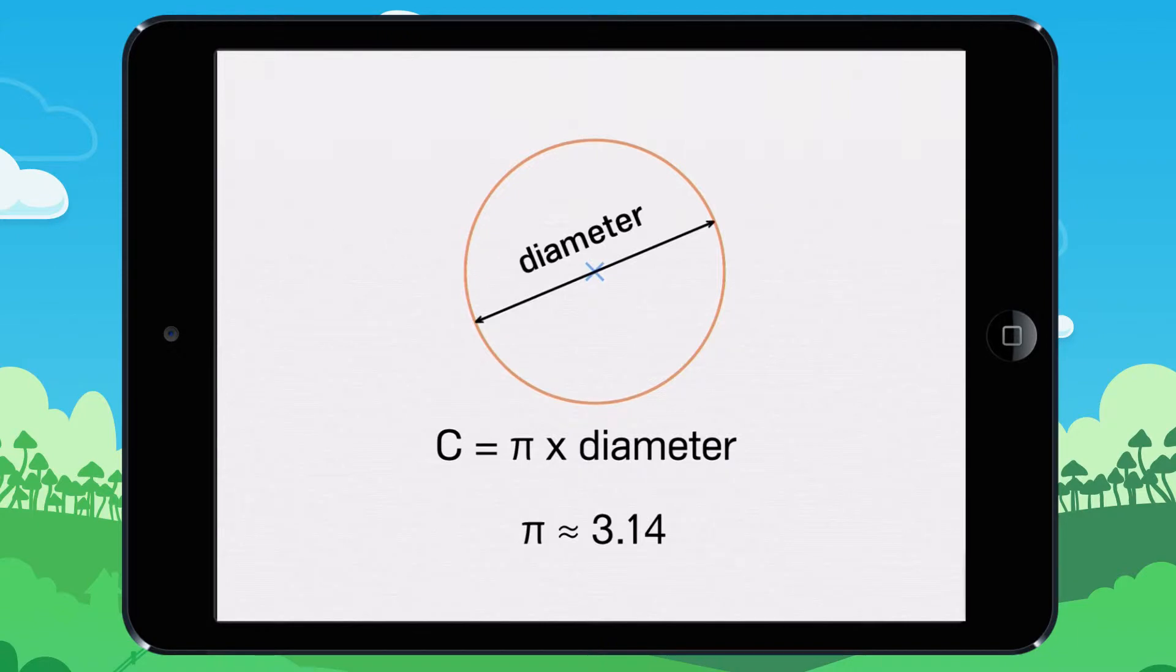Pi is approximately equal to 3.14. But why 3.14?